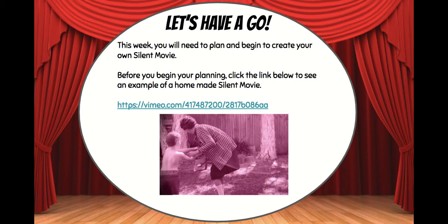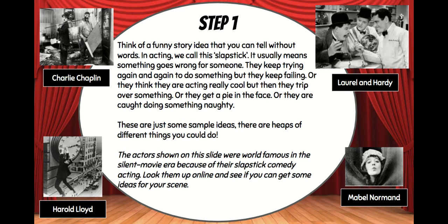This week you'll need to begin to plan and create your own silent movie. Before you begin planning, click on this link and it will take you to an example of a silent movie that was made by somebody else at home. After you've watched that, work through the next few slides and start planning your silent movie. The first thing you need to do is think of a funny story idea that you can tell without words — we call that slapstick in acting — and around the outside we've got a few famous actors who use slapstick. Charlie Chaplin is probably the most famous one that you might have already heard of, and you can research these actors to get some more ideas.